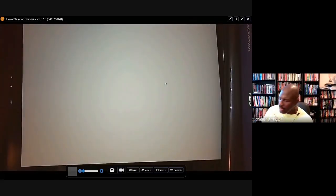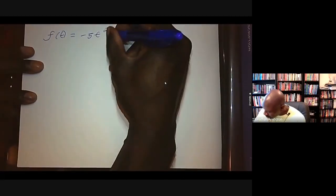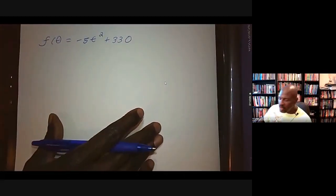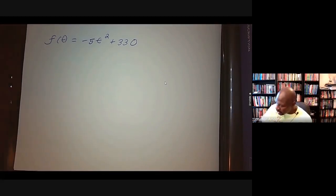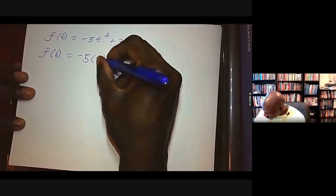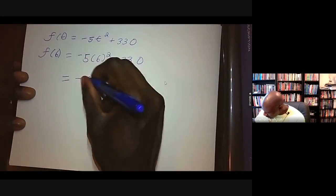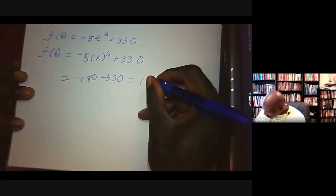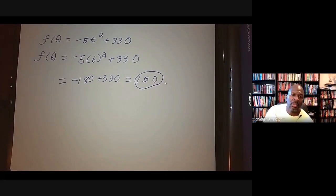The ball was dropped from a height of 330 meters, so the position function for this ball — let's call it f(t) — is f(t) = -5t² + 330. A position function for free fall is -5t² plus the initial height when units are in meters. To find the height at t = 6, we find f(6) = -5(6²) + 330 = -180 + 330 = 150. So at time t = 6, the ball will be 150 meters above the ground.